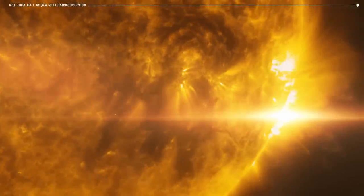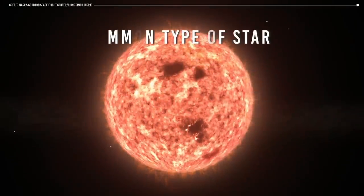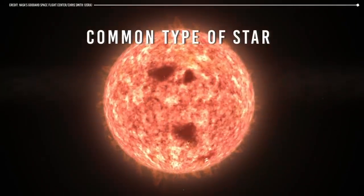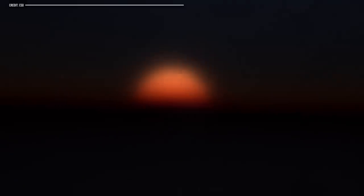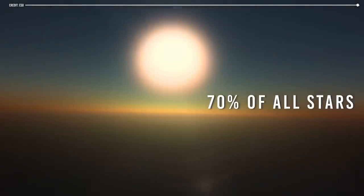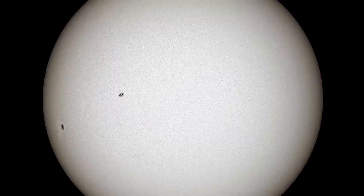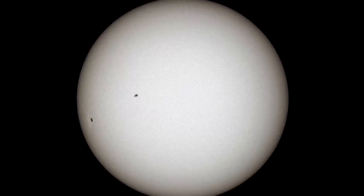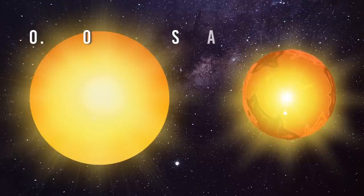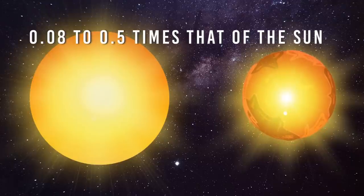Red dwarfs are the most common type of star in the Milky Way galaxy, making up about 70% of all stars. These stars are smaller and cooler than other types of stars such as the Sun, and they have a mass ranging from about 0.08 to 0.5 times that of the Sun.